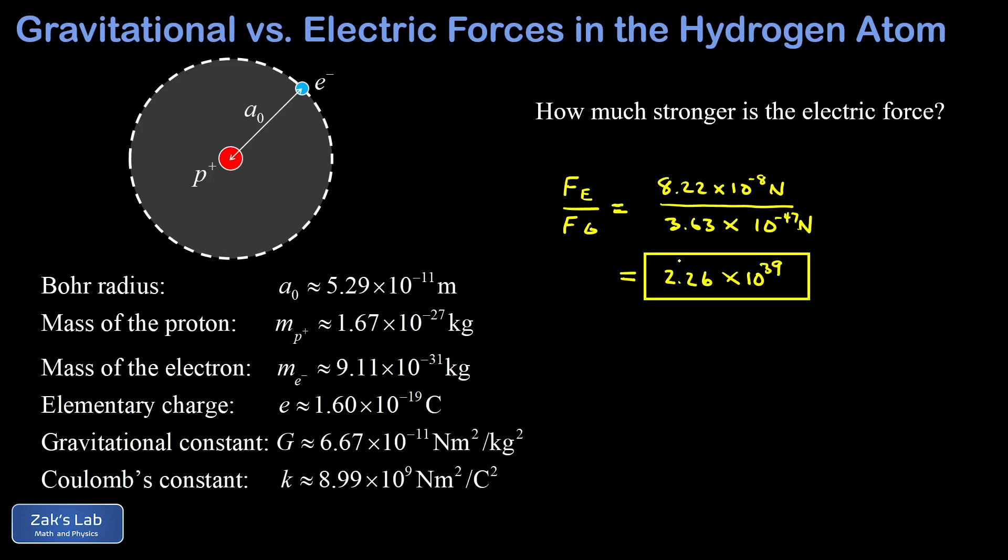So it turns out the electric force is radically bigger than the gravitational force in the hydrogen atom, exceeding the gravitational force by 39 orders of magnitude.